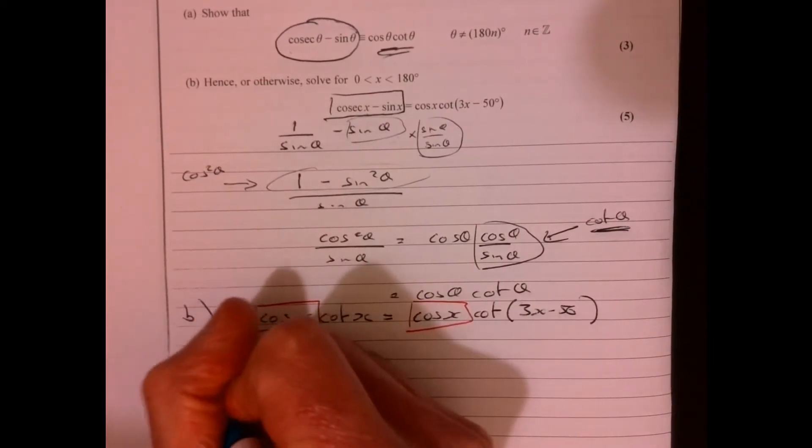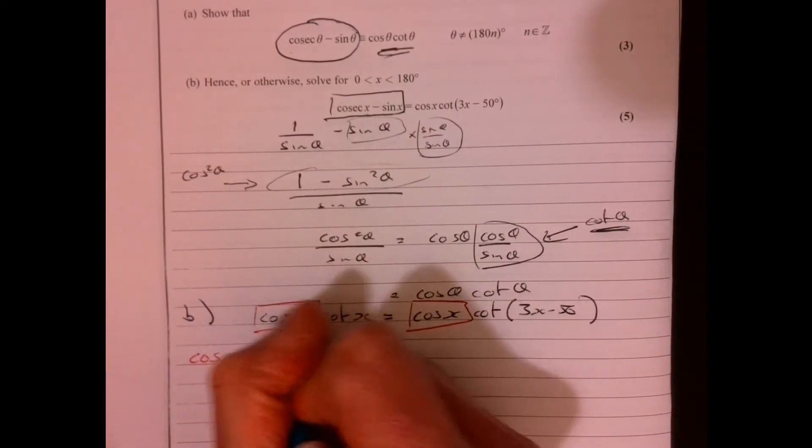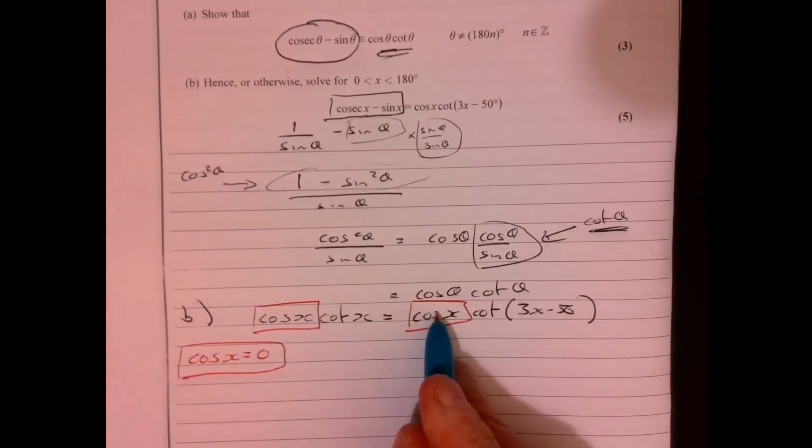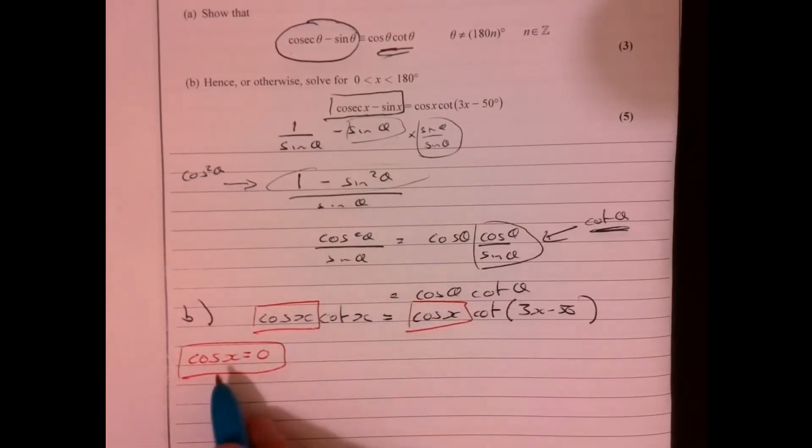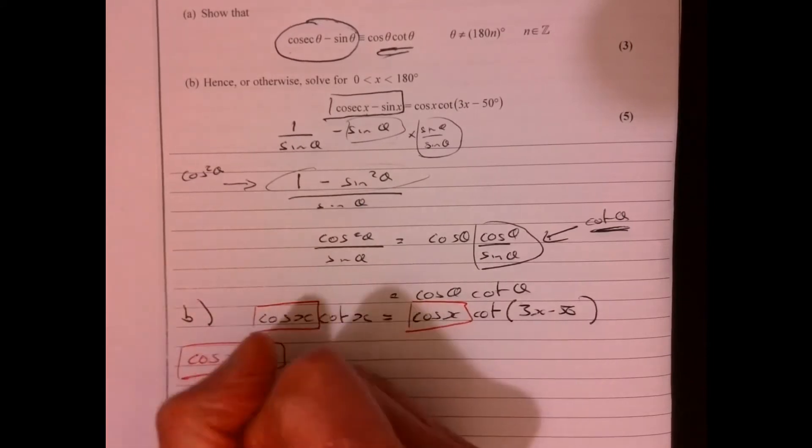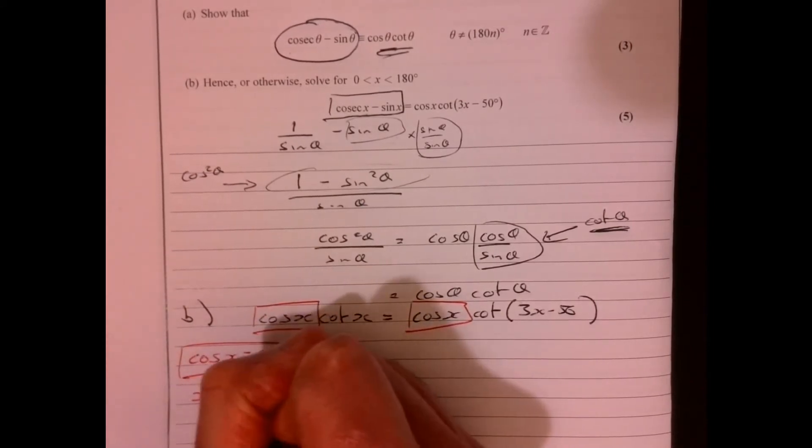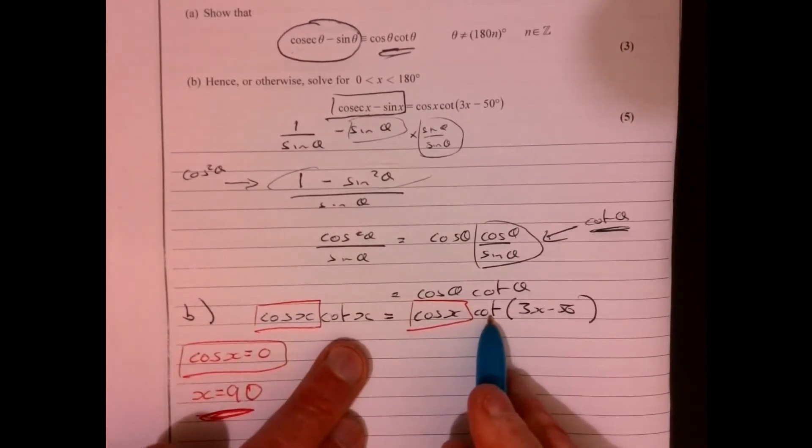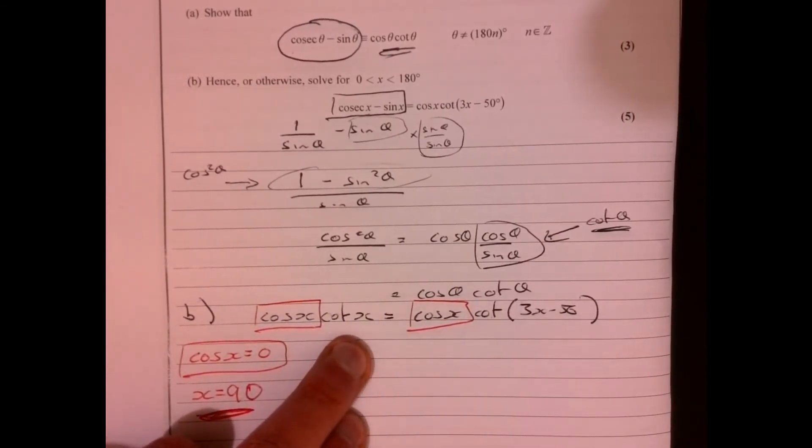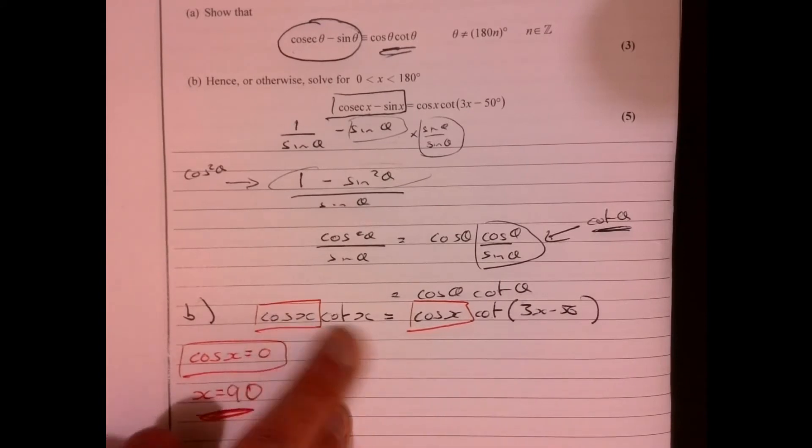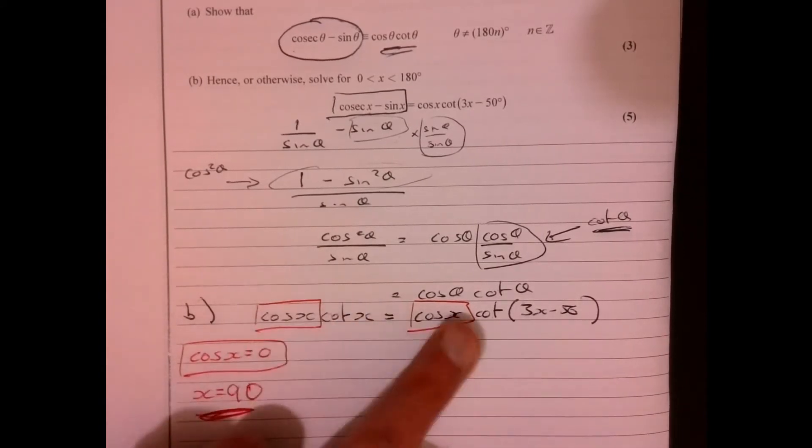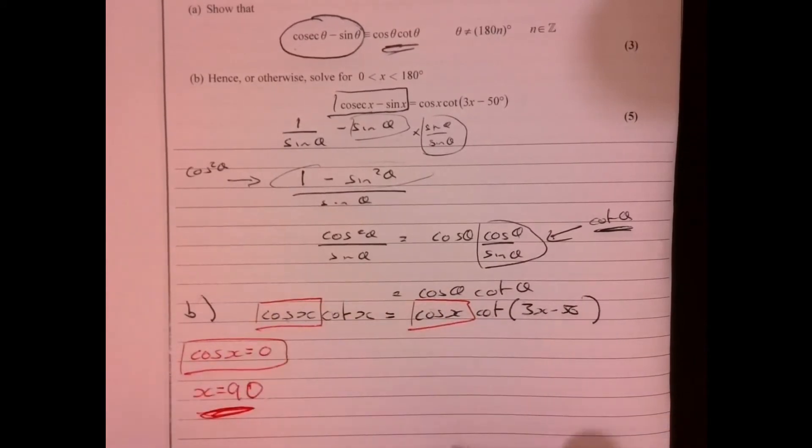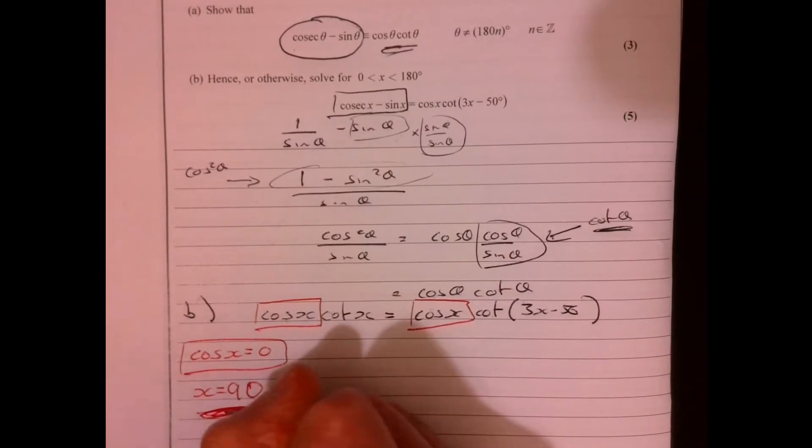But be careful about when cos x equals 0, then that's a solution. So cos of 90. So there's one possible solution is when x equals 90. Now let's just think about the other two. So effectively, we can cancel that possibility. So if cos x isn't 0, we can effectively divide both sides by it. So there's one solution.